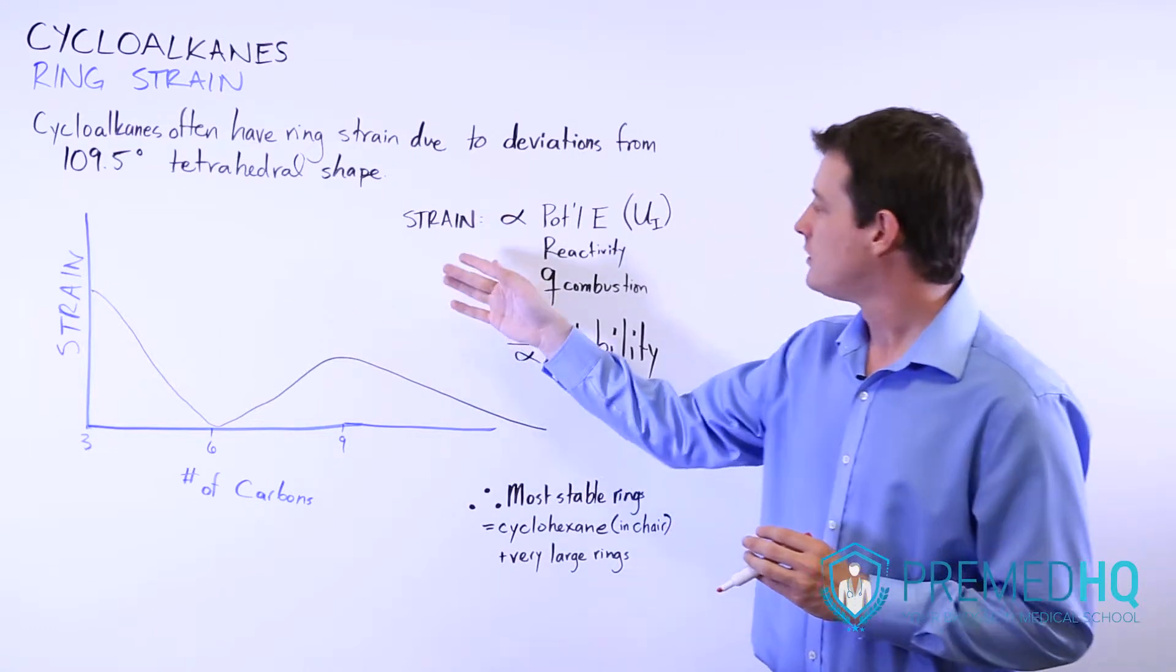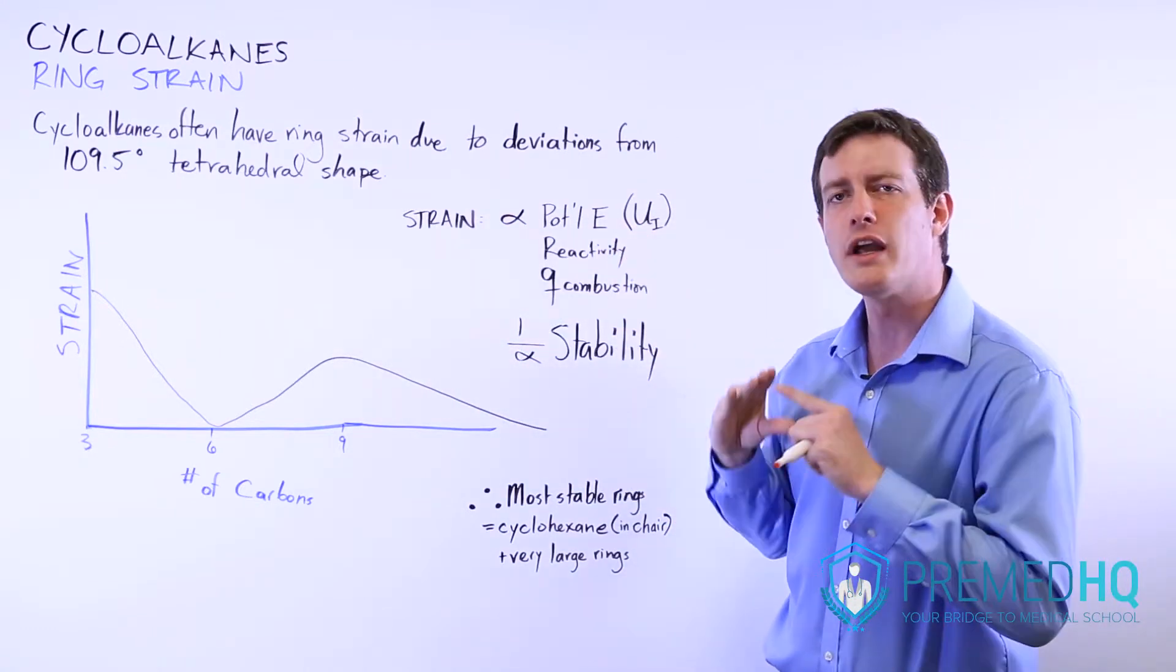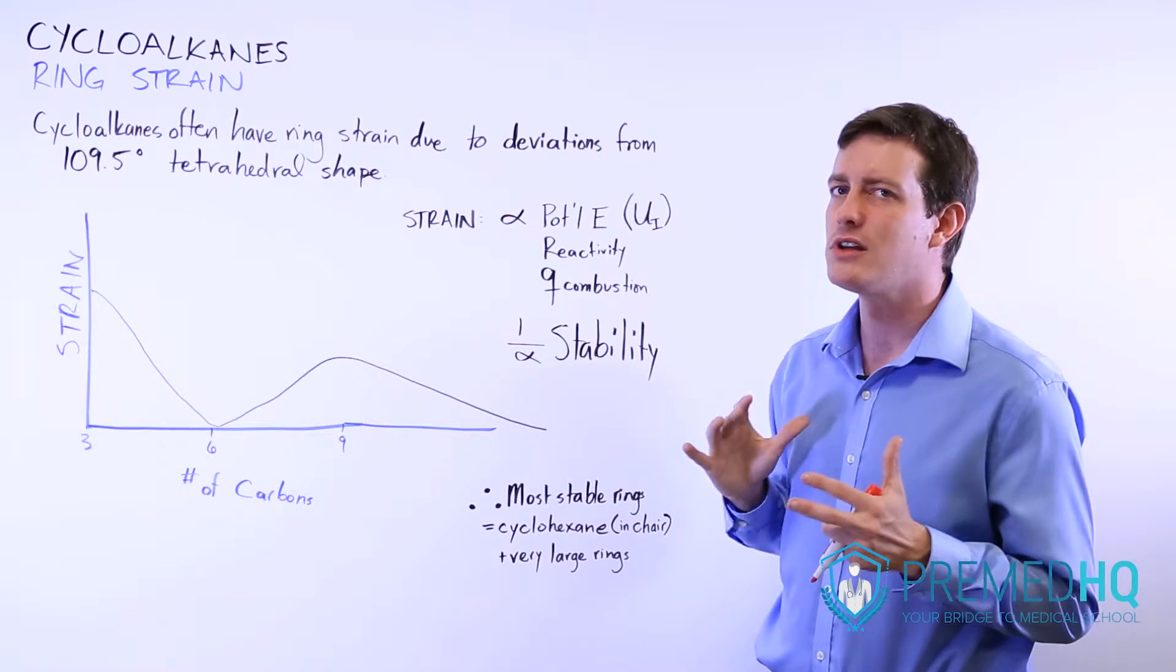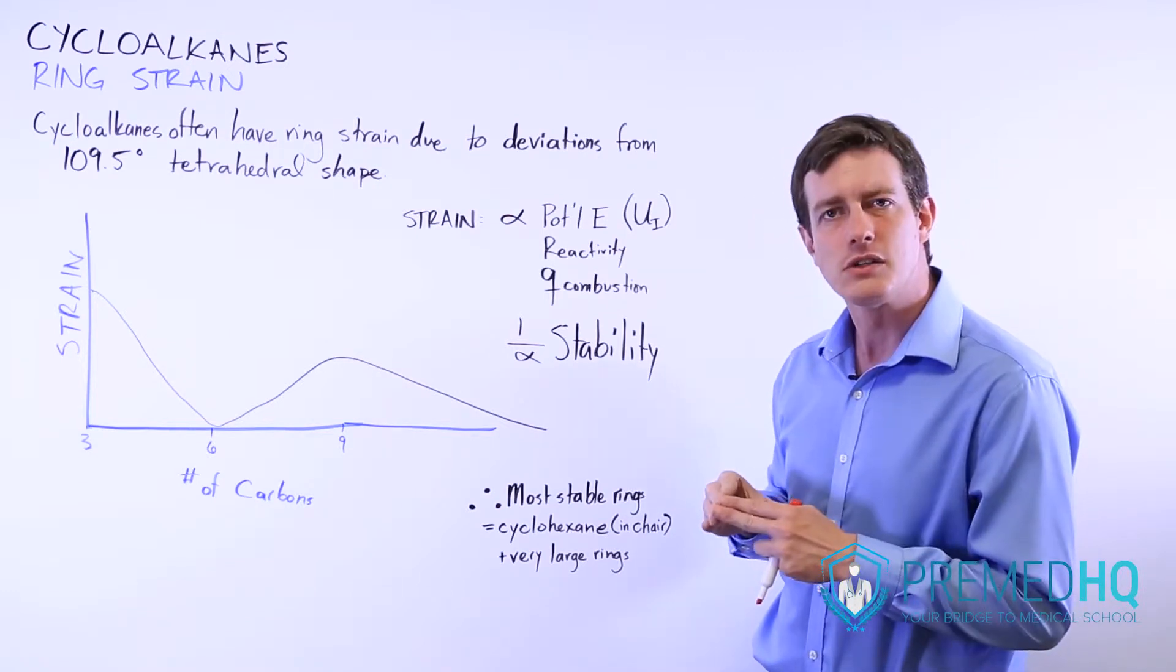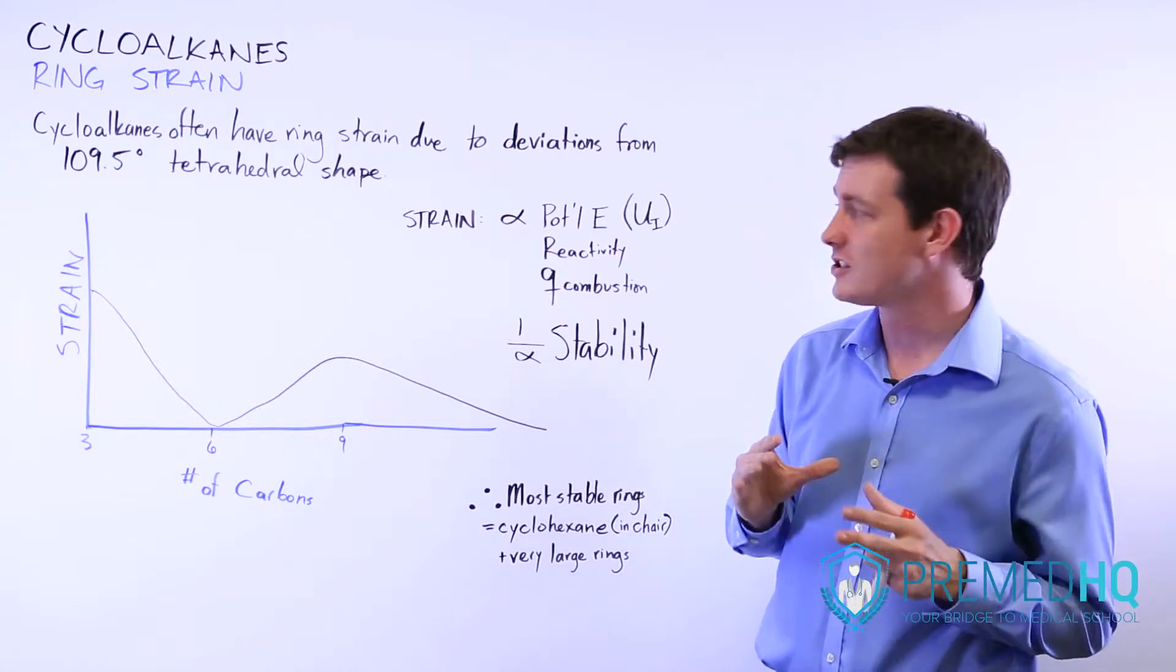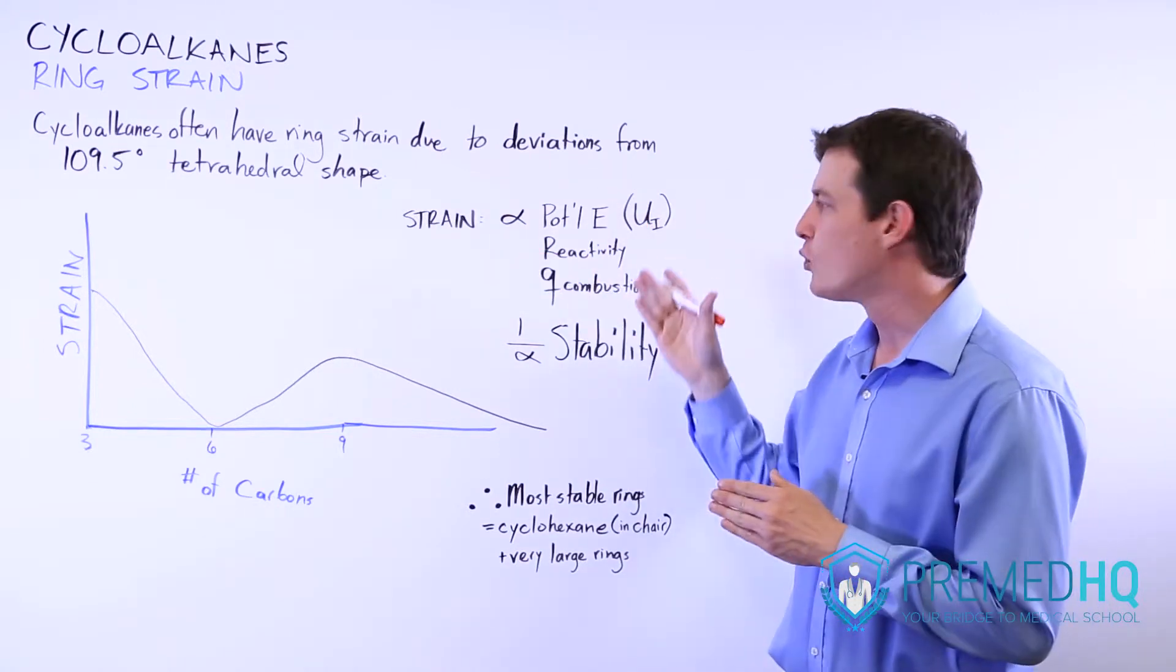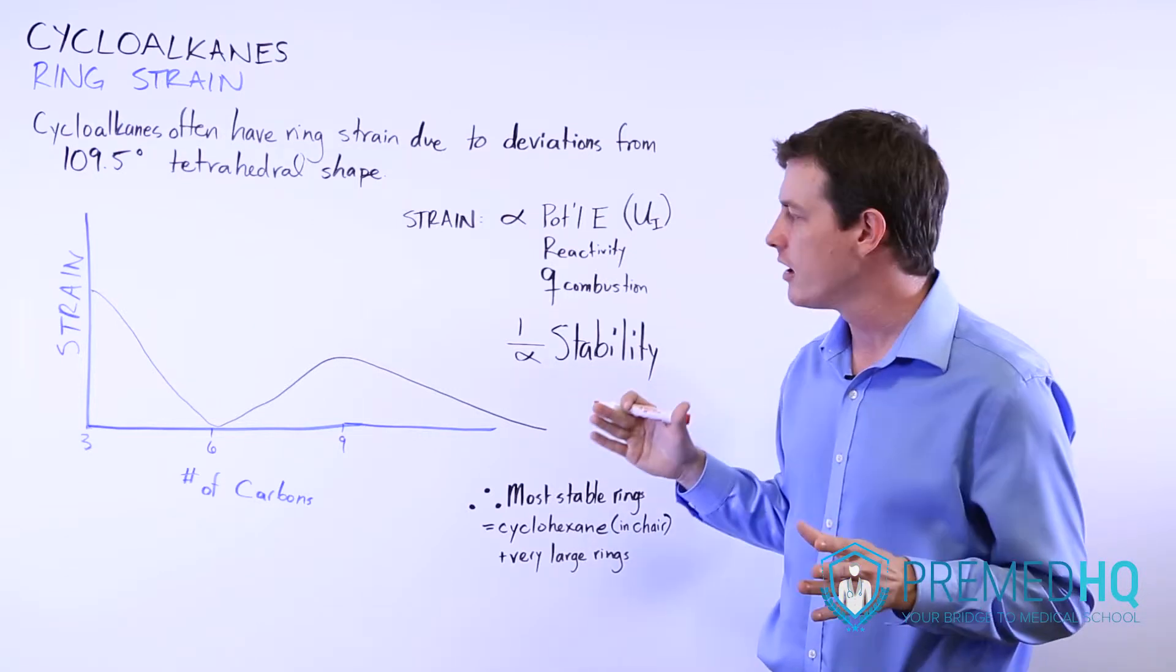Ring strain is proportional to the potential energy being stored in those bonds. The greater the strain is, the more potential energy there is because those electrons are not in a super low energy state. They're strained or very compressed and being forced into a shape that they don't want to hold. And as a result, there is potential energy. This makes those electrons more reactive because they do want to get out of that current environment.